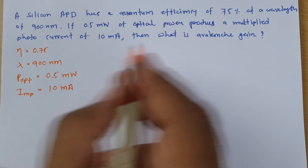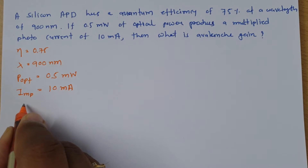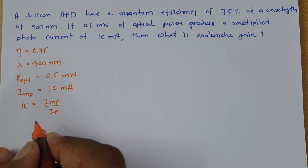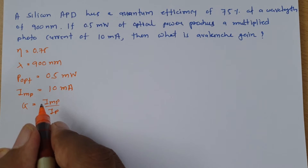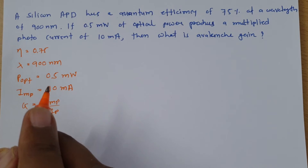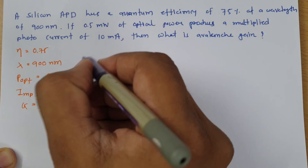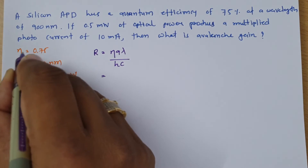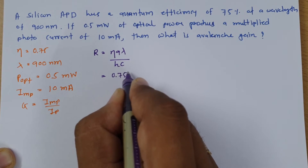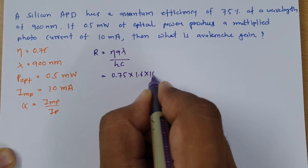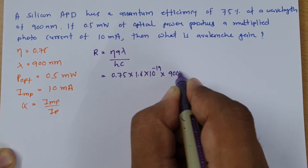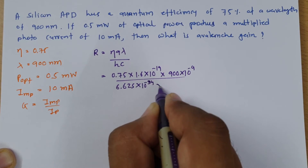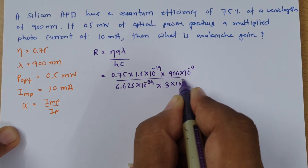The avalanche gain is multiplied photocurrent divided by photocurrent, so first we need to calculate the photocurrent. Photocurrent is found from the responsivity R, where R = ηqλ / hc. Here η = 0.75, q = 1.6×10⁻¹⁹, λ = 900 nanometers = 10⁻⁹, h = 6.625×10⁻³⁴ (Planck's constant), and c = 3×10⁸ (velocity of light).